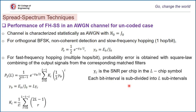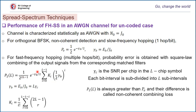Each bit interval is subdivided into l subintervals to implement fast frequency hopping. The probability of error for fast hopping is always much greater than the probability of error for slow frequency hopping. The difference P2(l) − Pe between these two probabilities is called non-coherent combining loss.